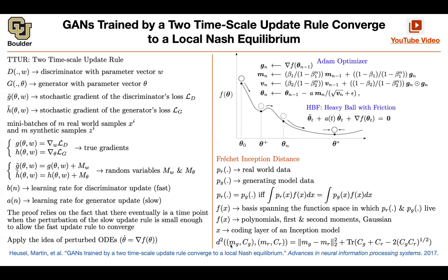The idea is: take your generated data, push it through a pre-trained architecture — the same thing we were doing when computing inception score. Take those generated images, push them through a pre-trained classifier, stop at some layer, and then compute the means. Do the same thing to your real images: compute the means and compute the covariance matrices. Then assume that in the latent space you have two normal distributions.